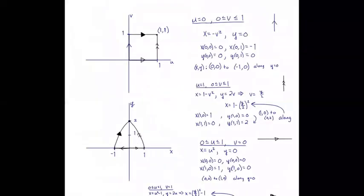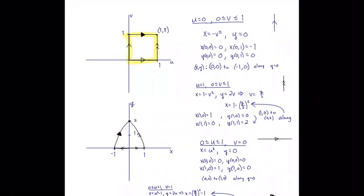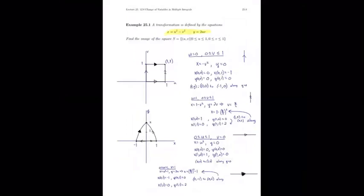These transformations are primarily used to simplify integrals. If we had an integration region like the image we just found, it could be complicated to integrate directly. It might be easier to go back and integrate over a simple square. Rectangular integrals with constant limits of integration are our favorite — we can change the order of integration more freely and avoid complicated boundary functions. Coming up with the transformation is hard, but in most math, physics, and engineering problems, a common change of variables is known in advance.